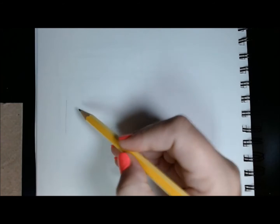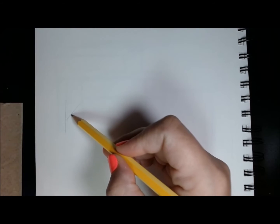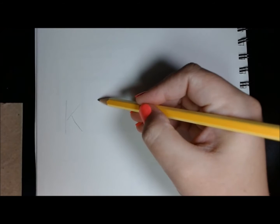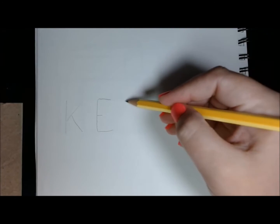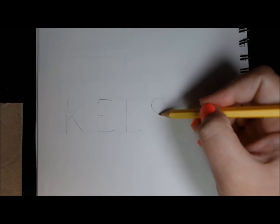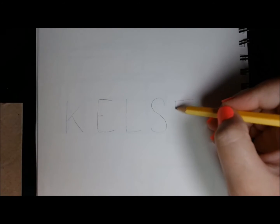Before we start any type of graffiti style lettering, we're going to write out the letters of our name in all capitals. Keep in mind they need to be spaced out pretty evenly so that you have room to actually create the bubble or the box around it.